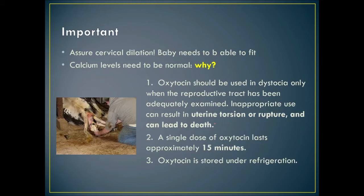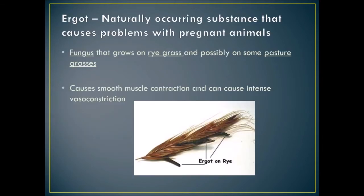Ergot is a naturally occurring fungus that grows on rye grass and possibly some pasture grasses. It causes smooth muscle contraction and intense vasoconstriction, and causes problems for pregnant animals. Corticosteroids are produced by the adrenal cortex and are used primarily for their anti-inflammatory effect, but they can also induce parturition in the last trimester of pregnancy.